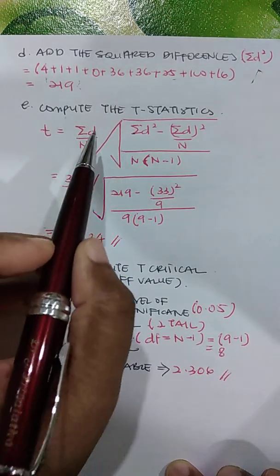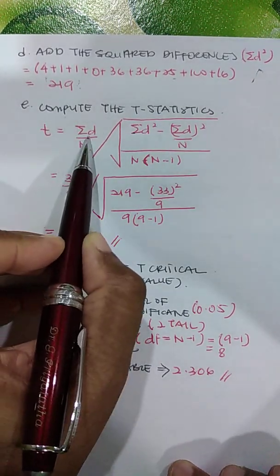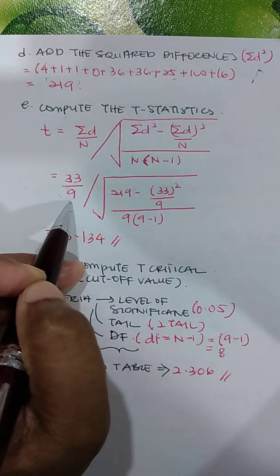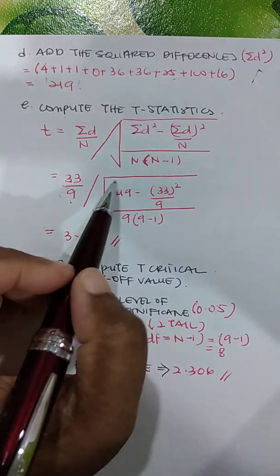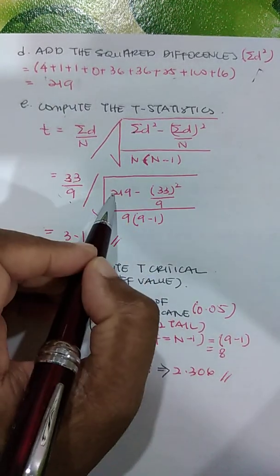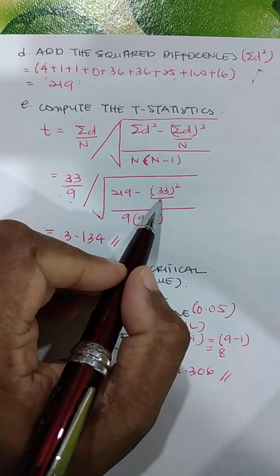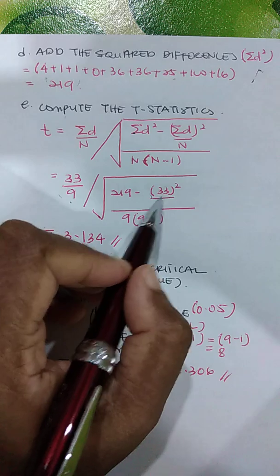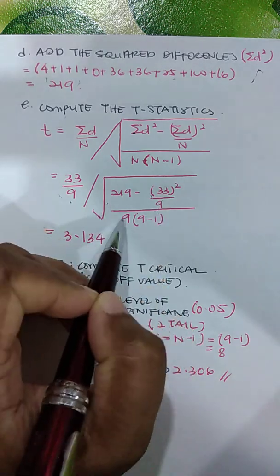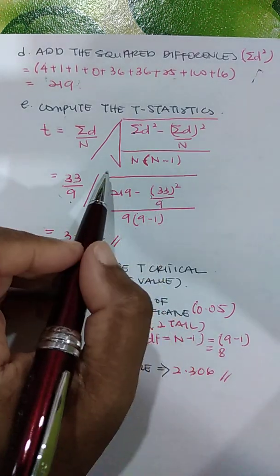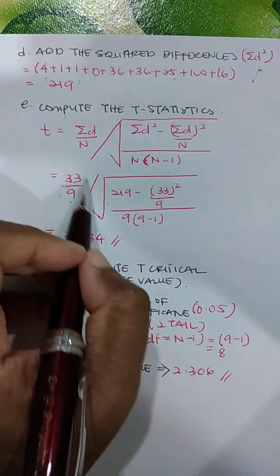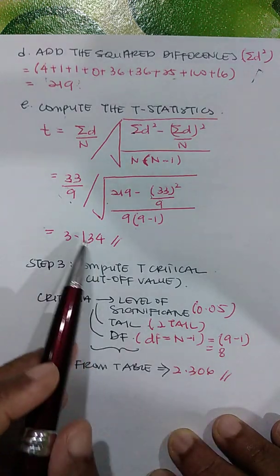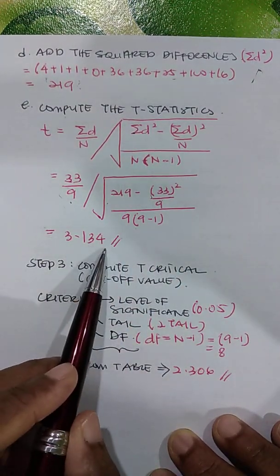The sum of differences is 33, and the total sample size is 9. Plugging into the formula: 33 divided by 9, divided by the square root of [219 minus (33² divided by 9)], all divided by (9 minus 1). Solving this gives a T statistic of 3.134.